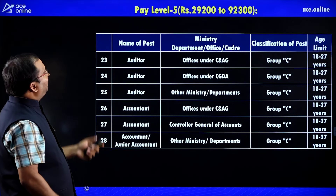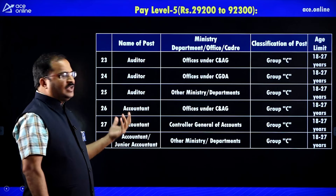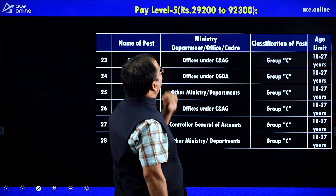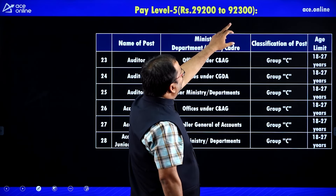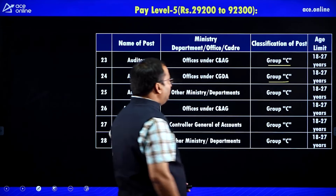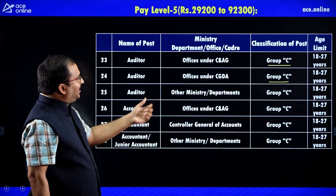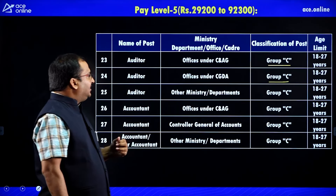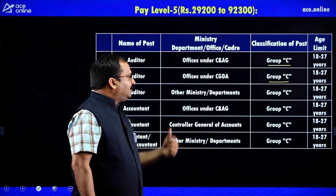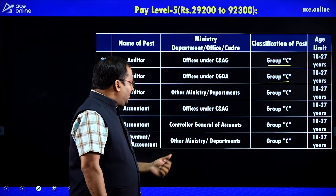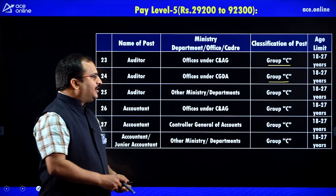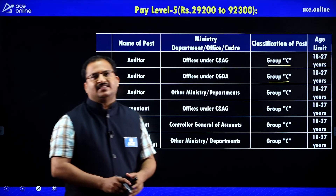Pay Level 5 posts include Auditors, Accountants and Junior Accountants. The pay band is ₹29,200 to ₹92,300. These are Group C level posts. Auditor positions are available in various departments like CGDA, C&AG, and other ministries and departments. Accountant posts are in offices under C&AG, Controller General of Accountants, and other ministries. The age limit here is 18 to 27 years.